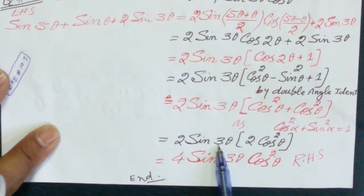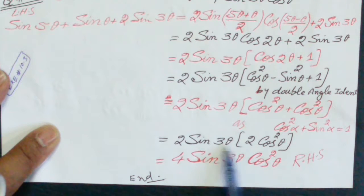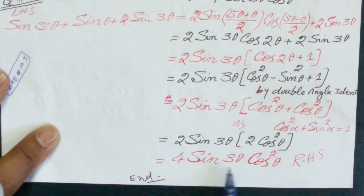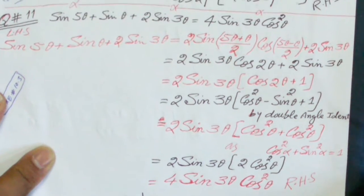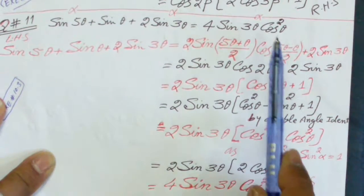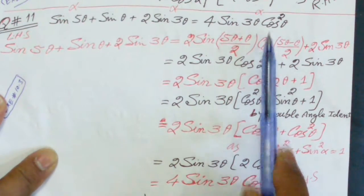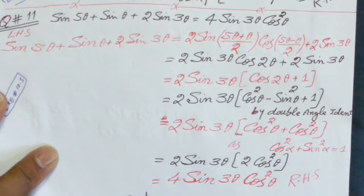After the simplification, we get 2 sine 3 theta multiplied by 2 cosine squared theta, which equals 4 sine 3 theta cosine squared theta. This is the required result.